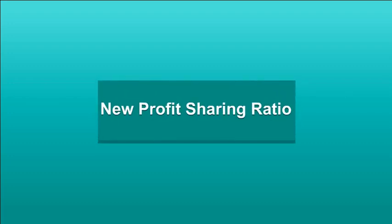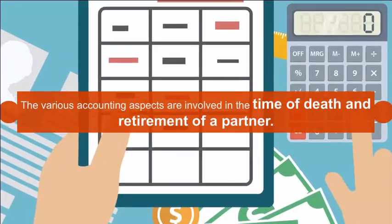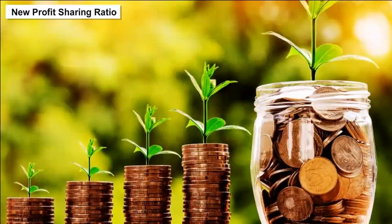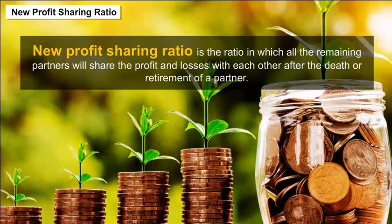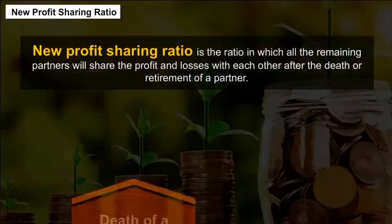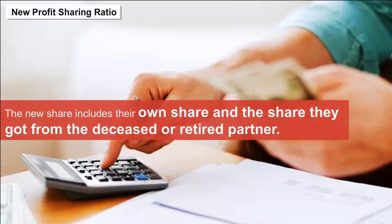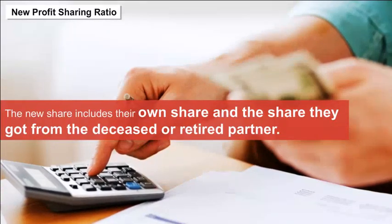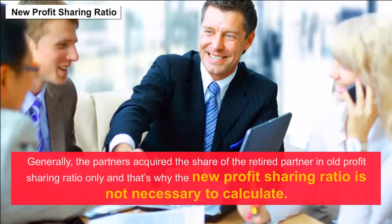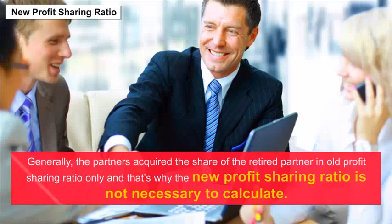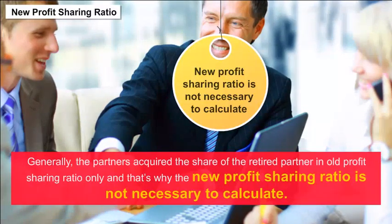New profit sharing ratio is the ratio in which all the remaining partners will share the profits and losses with each other after the death or retirement of a partner. The new share includes their own share and the share they received from the deceased or retired partner. Generally, partners acquire the share of the retired partner in the old profit sharing ratio, and in that case, the new profit sharing ratio is not necessary to calculate.